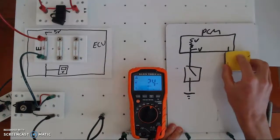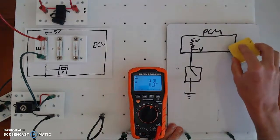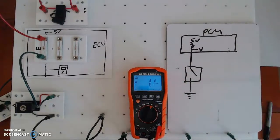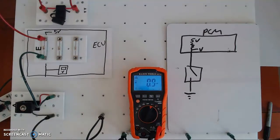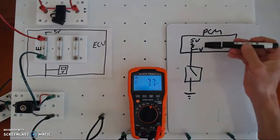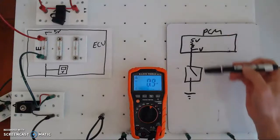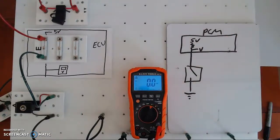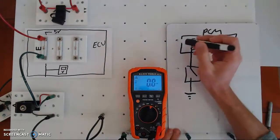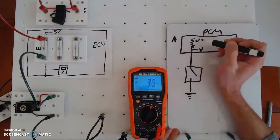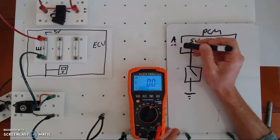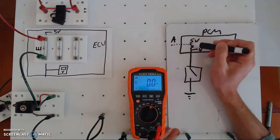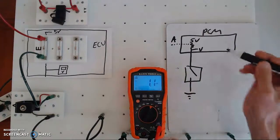Right here we're just talking about a two-wire input, specifically a switch, and here's how the computer can tell if the switch is open or closed. We're going to break this schematic up into three parts.